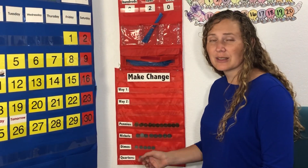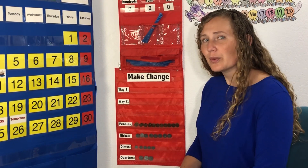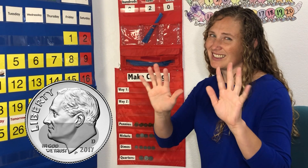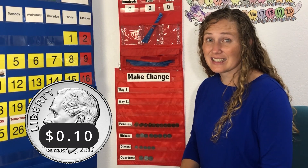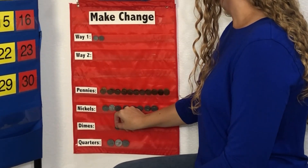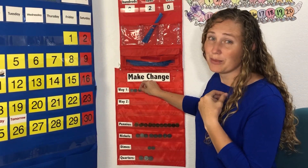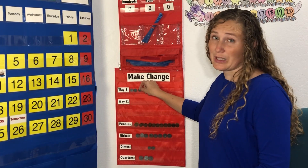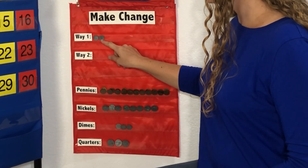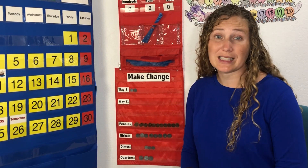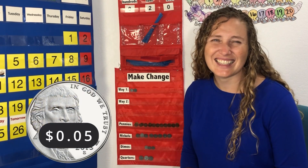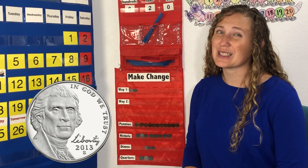Now let's make some change. How do we make 25 cents with the coins we have here? Do you want to start with dimes? Dimes are worth 10 cents. Let's count by tens: 10, 20, 30. But 30 cents is too much — 30 is more than 25. We'll need to put a dime back. 10, 20. We're at 20 cents, but we want to make 25. We have a coin that's worth 5 — it's called a nickel. Let's use a nickel to get the rest of the way to 25.